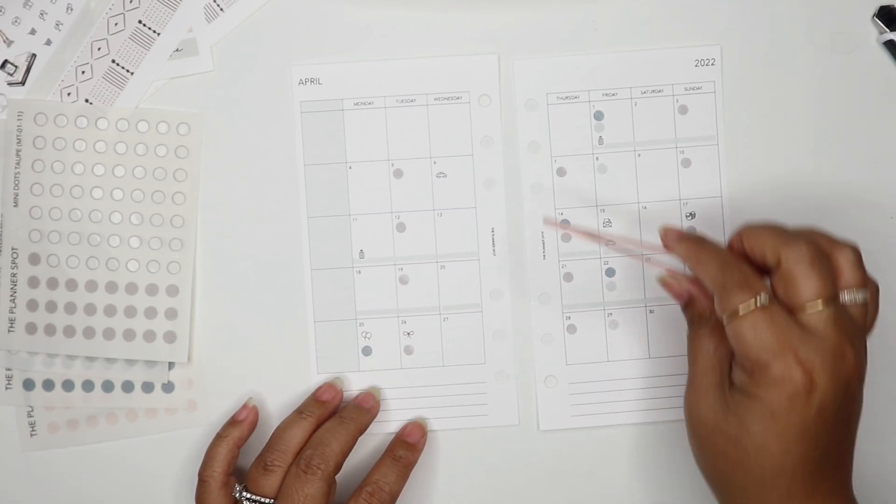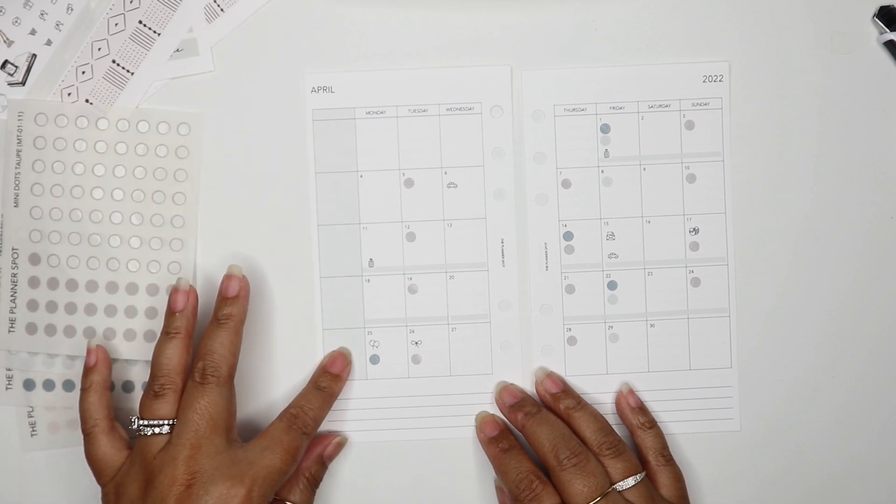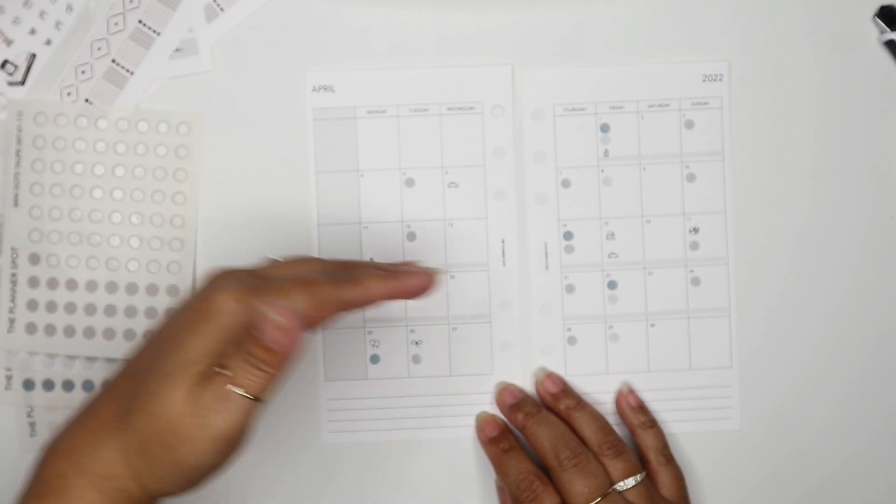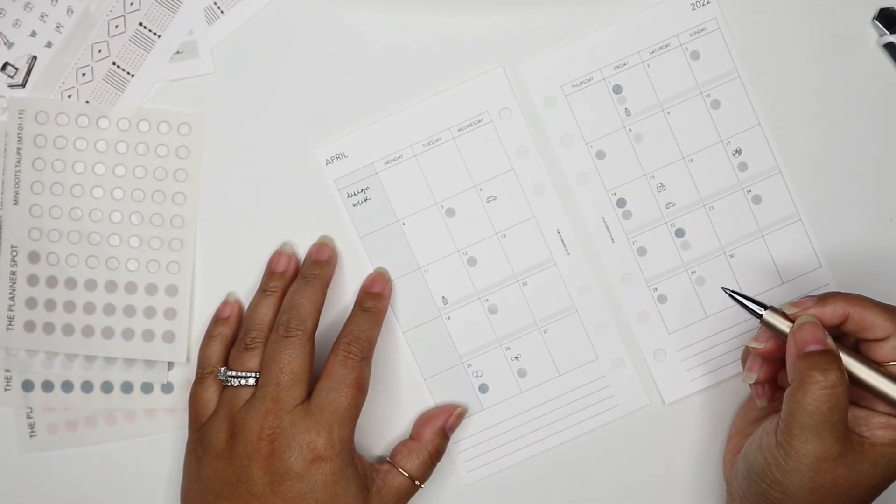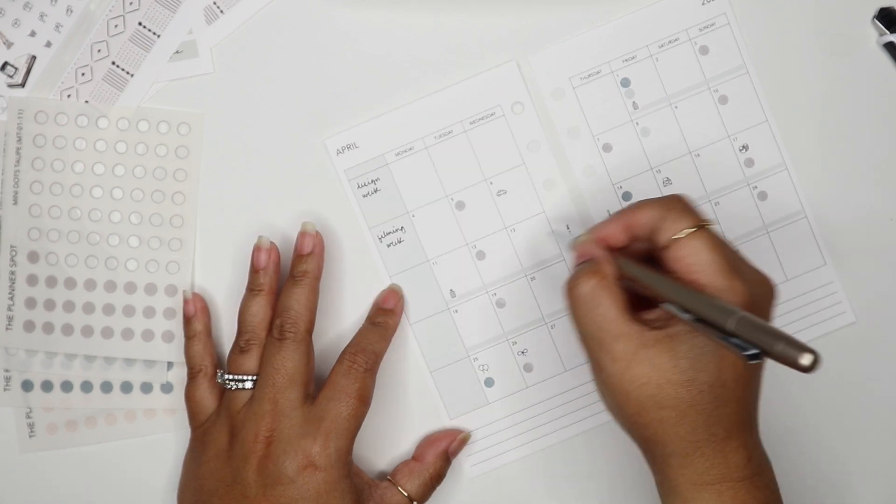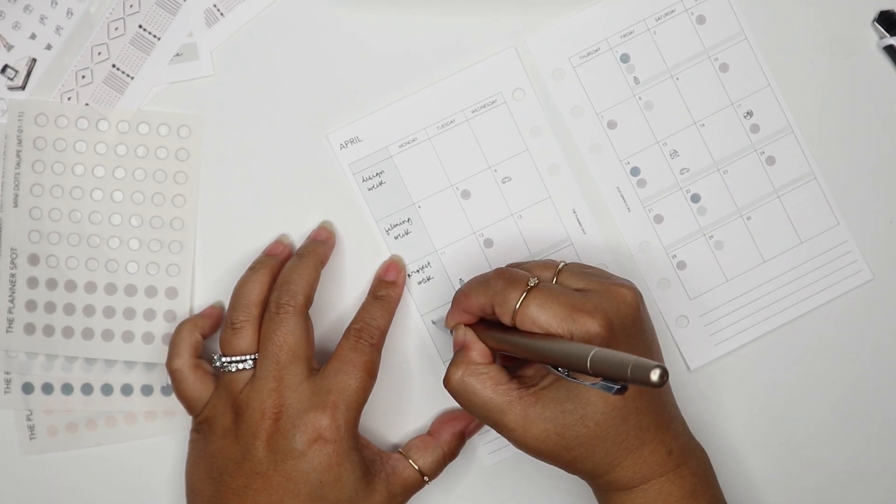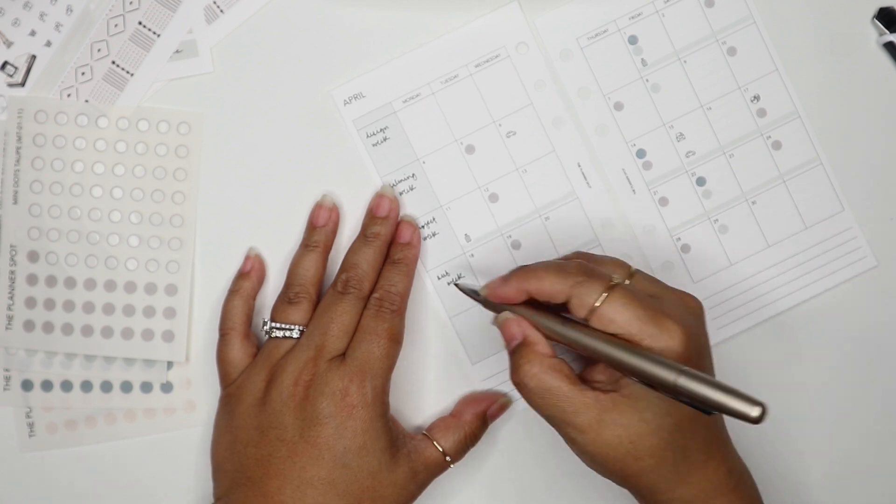That's it for the main section. This side column is a space for me to know what I'm going to be working on this week. This would be design week, then filming week, then project week, then sub week, and then the last week is design week for the next month.